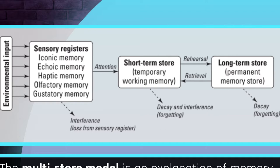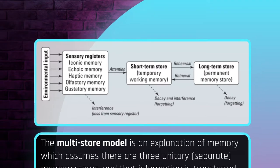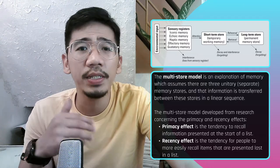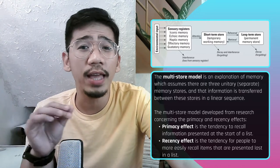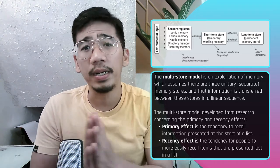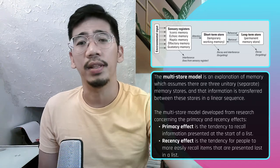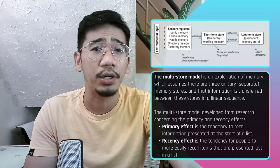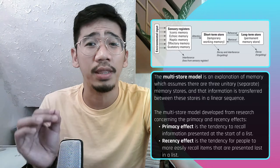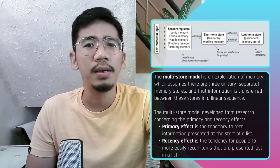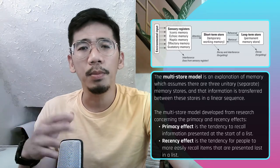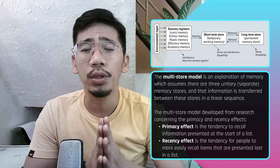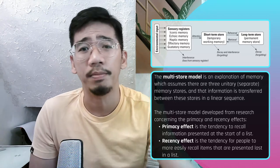The multi-store model developed from research concerning the primacy and recency effects. The primacy effect refers to the tendency for participants presented with lists of things to remember to recall information presented at the start of a list better than information in the middle. In contrast, the recency effect refers to our tendency to more easily recall items presented last in the list — likely because those items are the most recent and are still being held in short-term memory.